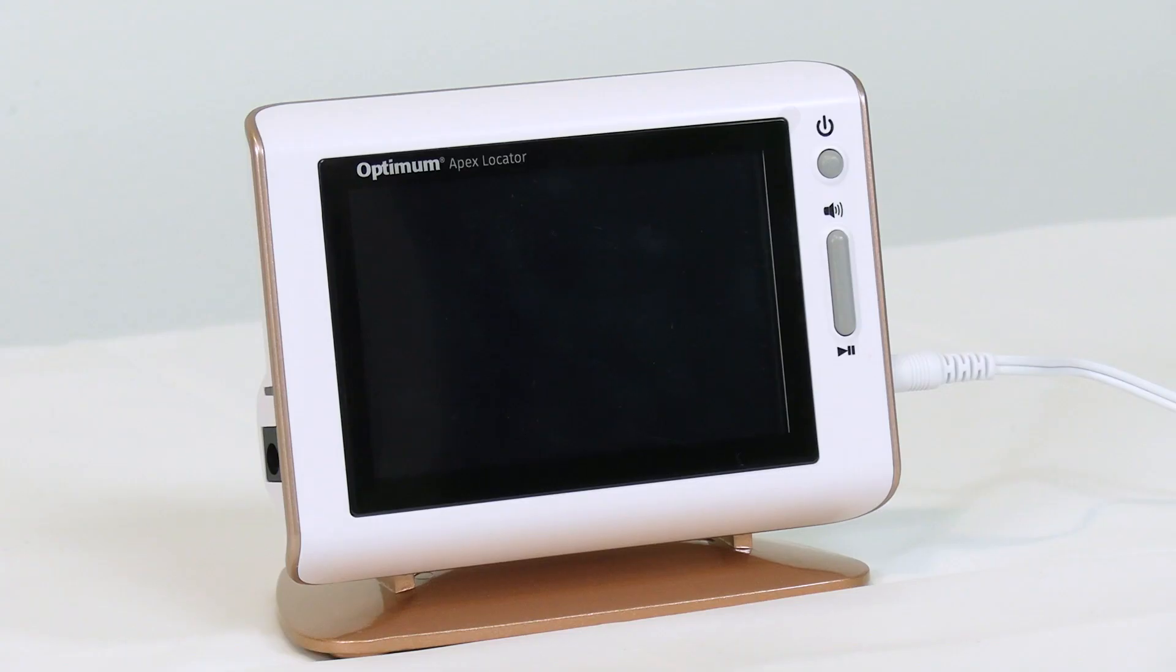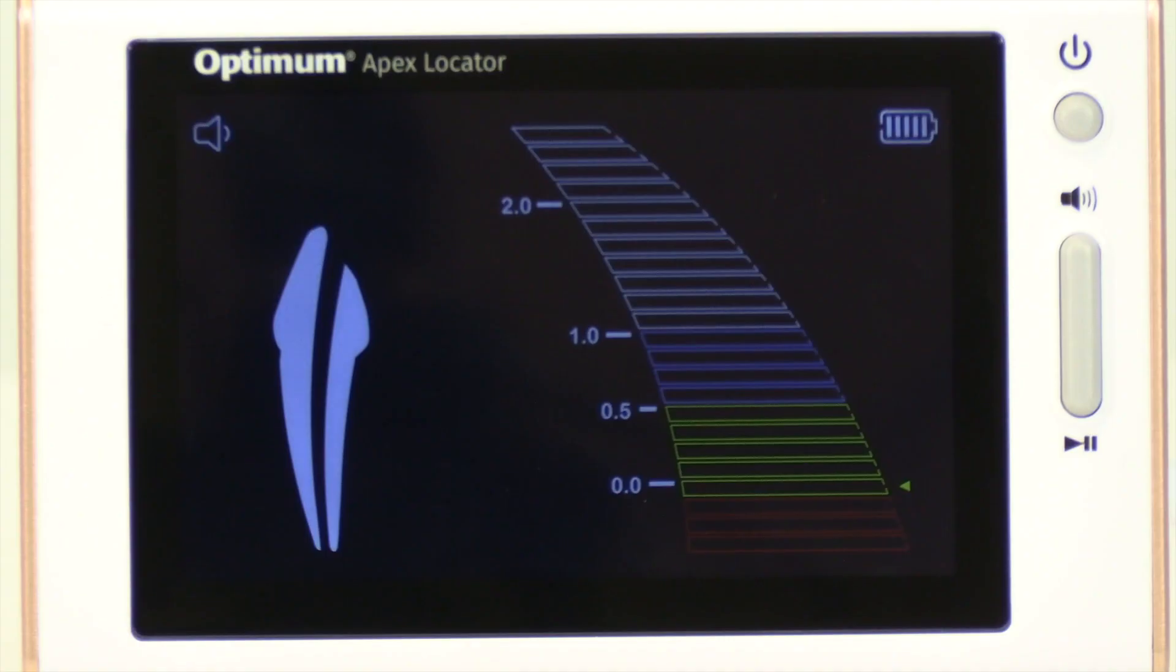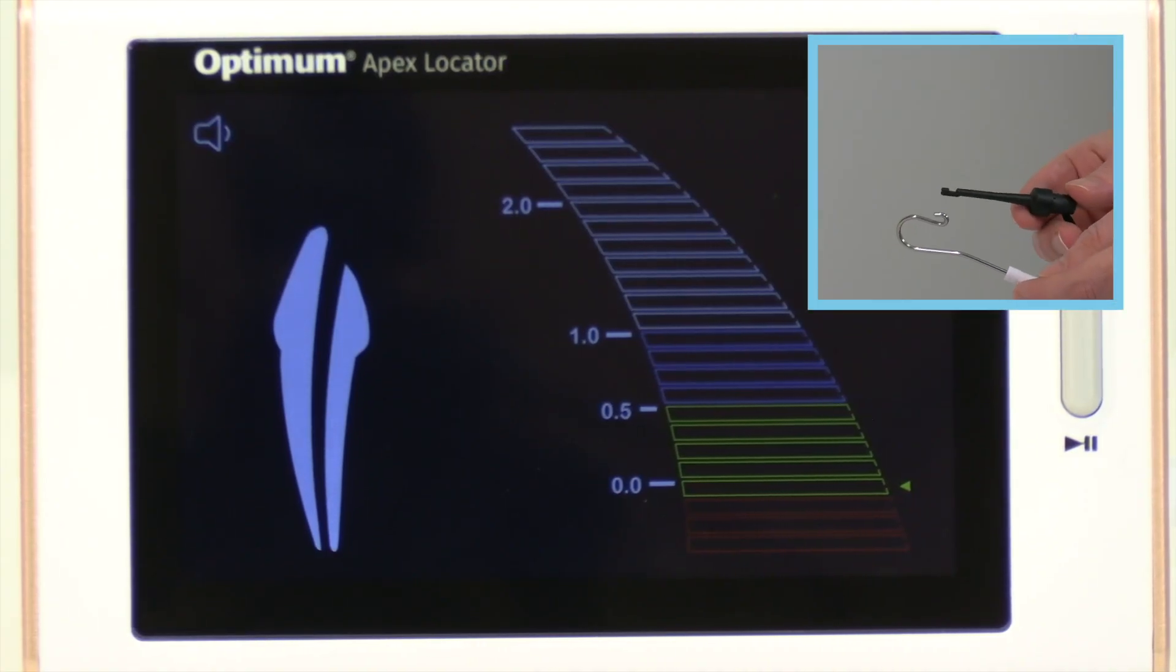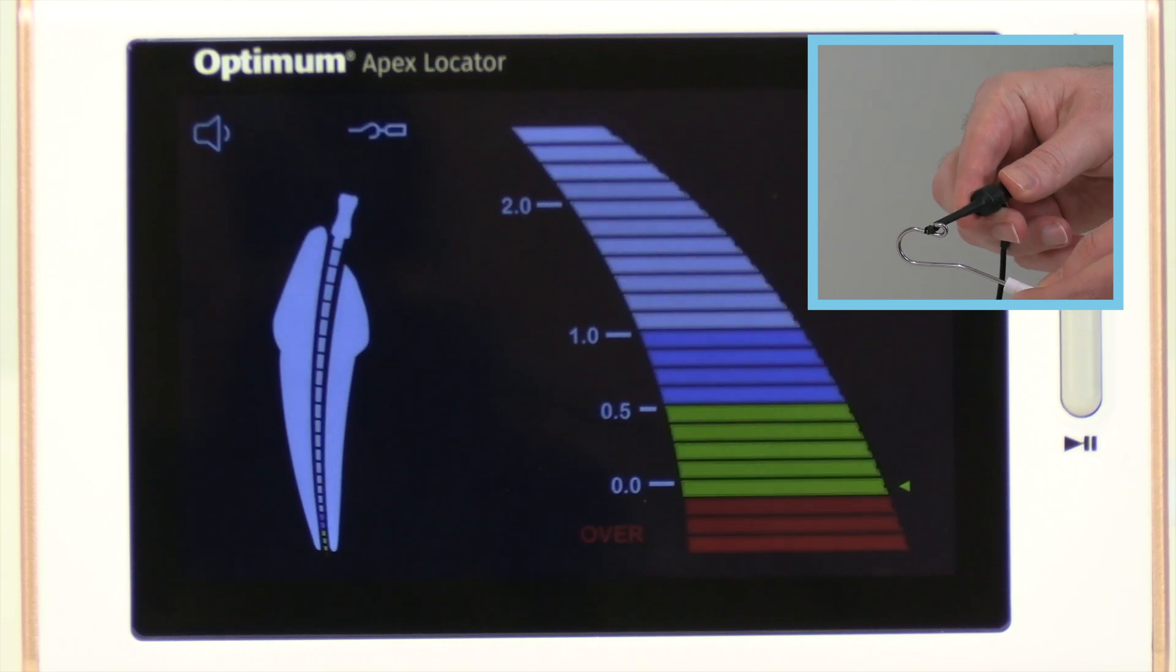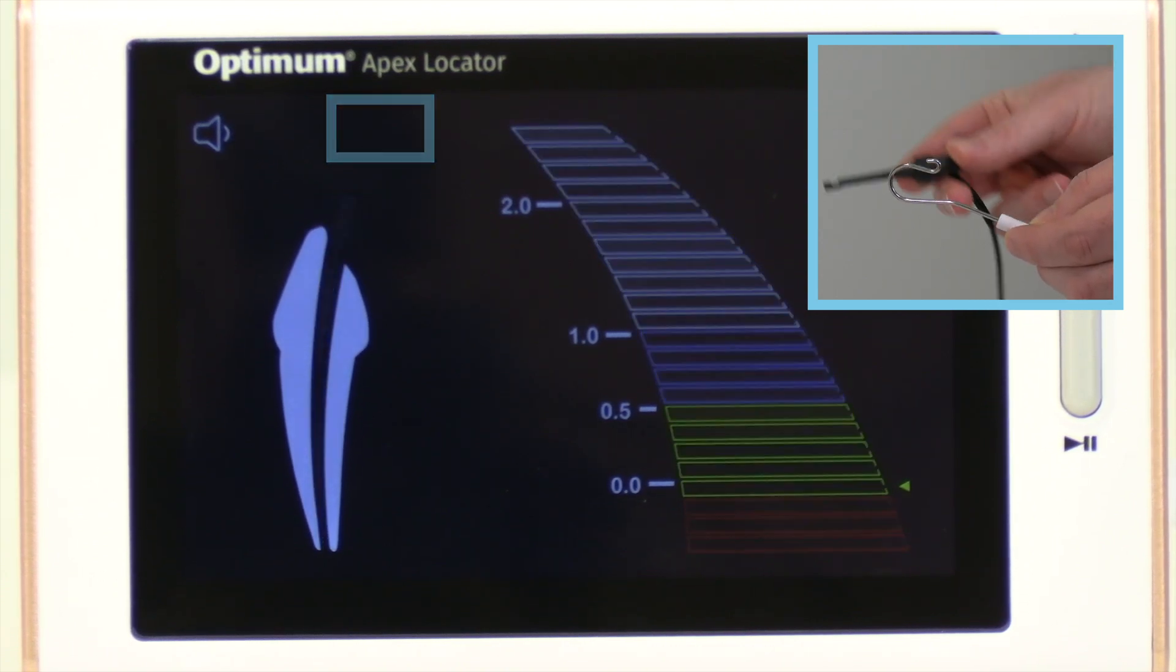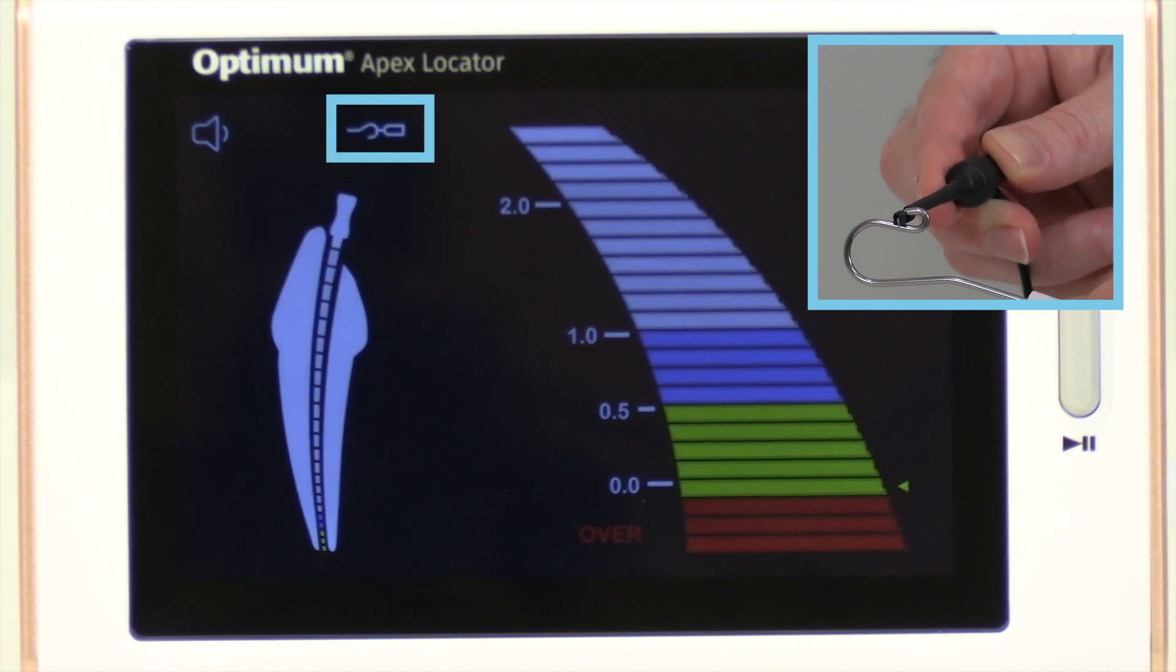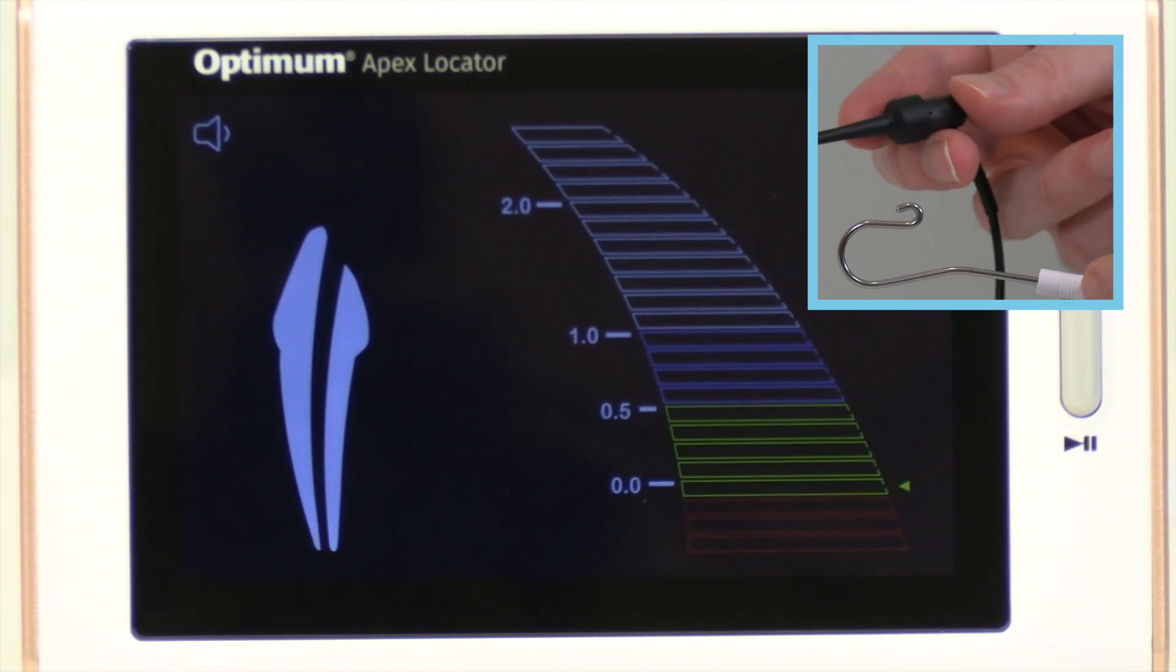To confirm the file clip and measuring wire are in proper contact, turn the unit on and then touch the lip hook to the bent wire of the file clip. Check to ensure the connection icon is displayed on the LCD screen. If the icon is not displayed, the measuring wire may be damaged and should be replaced.